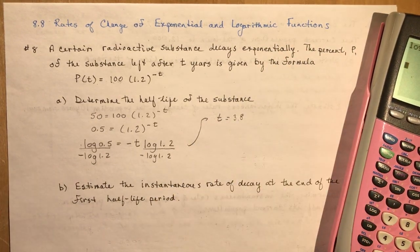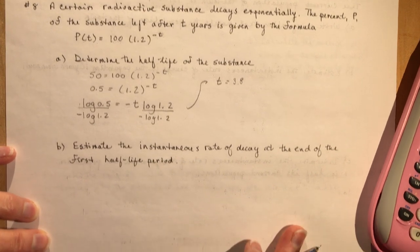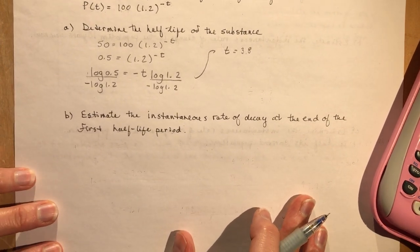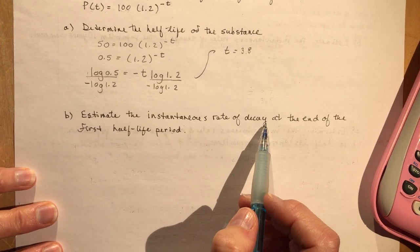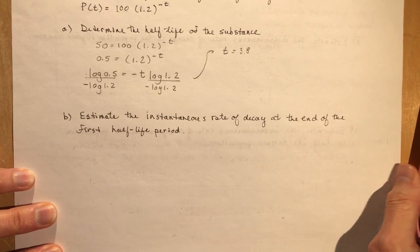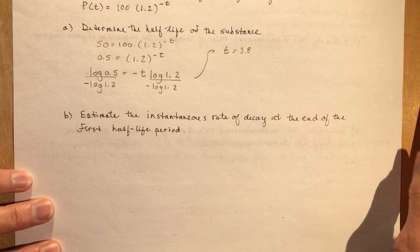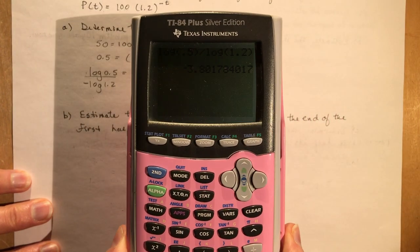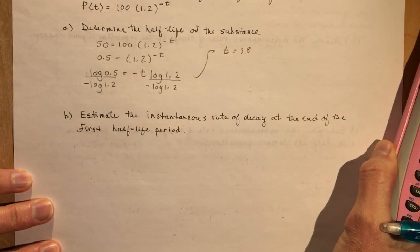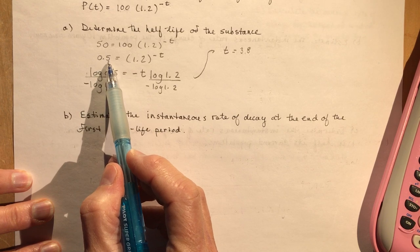So that means in 3.8 years, half of the substance has decayed. The next question says: determine the instantaneous rate of change, or rate of decay, at the end of the first half-life period. So the end of the first half-life period occurs at 3.8 years. Now remember, we did have a lot of decimals after that, so if I plug in 3.8, I'm not going to get exactly 0.5 — it's not going to be exactly that number.